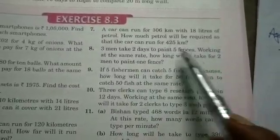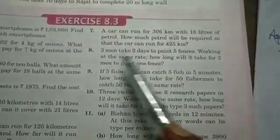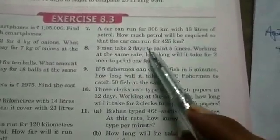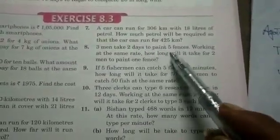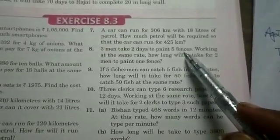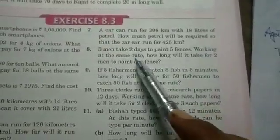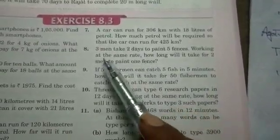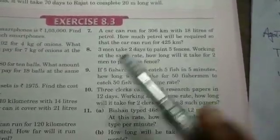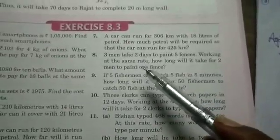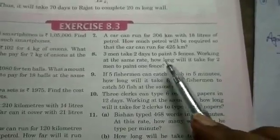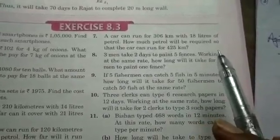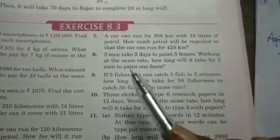That means three men are working on five fences and taking two days to paint the complete five fences. Working at the same rate means they worked consistently each day - they have not taken any rest, or if they have taken rest, it's uniform across all days.